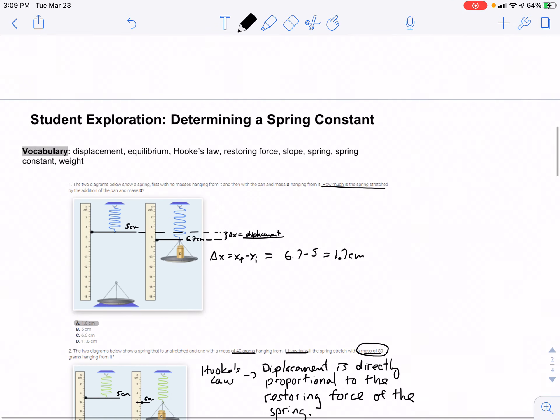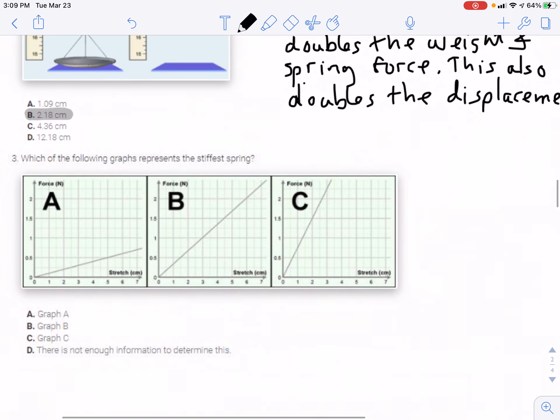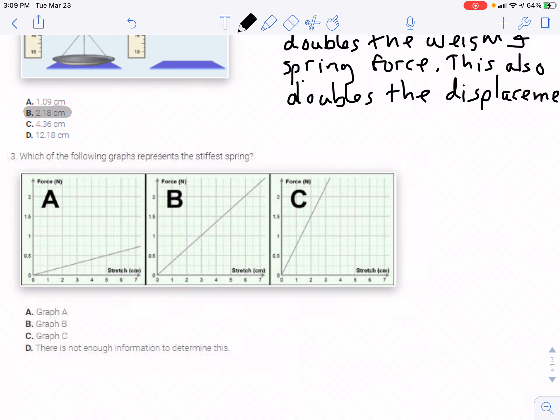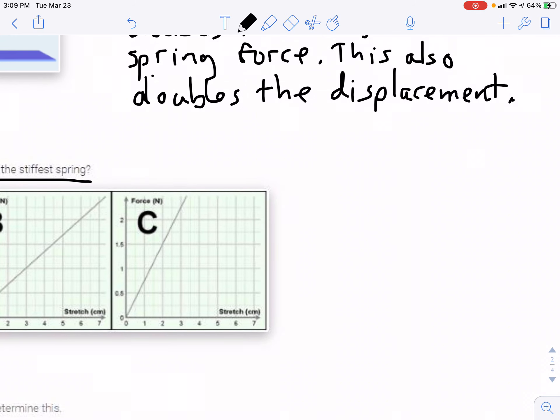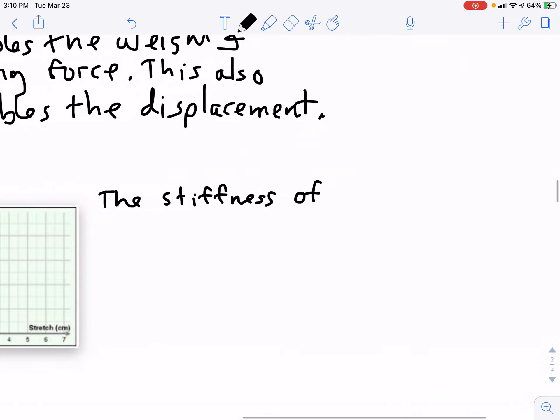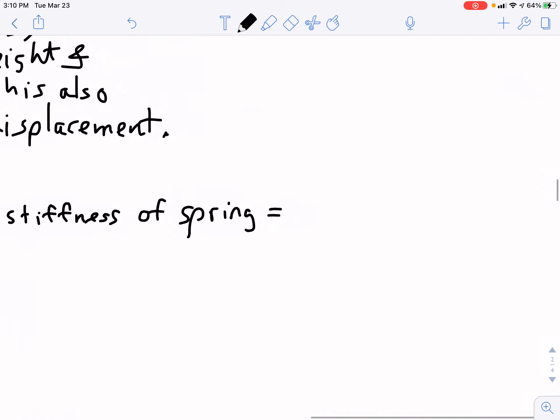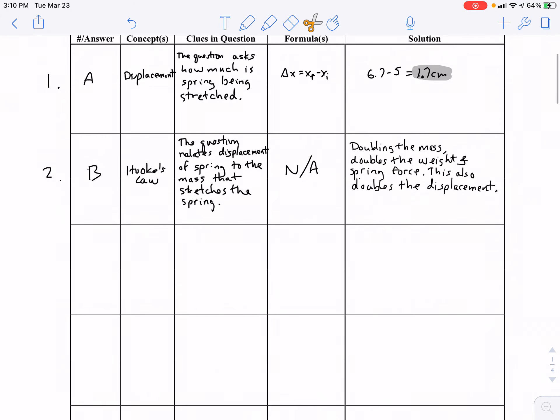Number 3. Which graph represents the stiffness or the stiffest spring? Well, the stiffness of a spring is related to what is called the spring constant. Since the question is asking about stiffness of the spring, the question is essentially asking about the spring constant.